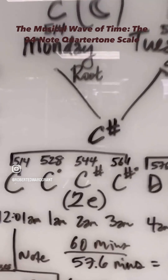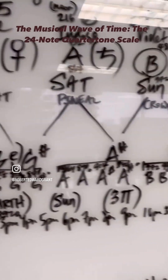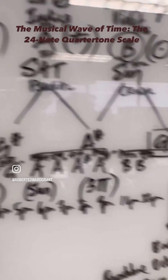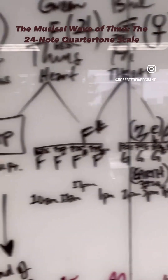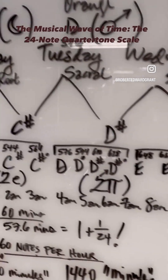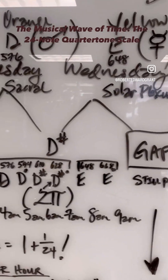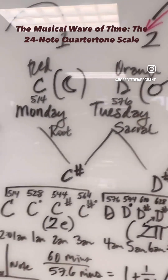We have C, D, E, F, G, A, B, and then repeating to C again — that's seven notes within the octave. But then we have 24 hours in each day, so I realized that this is actually a clock.